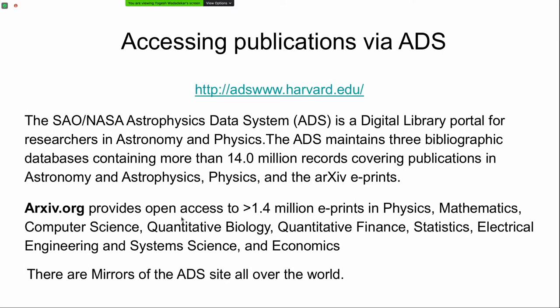The simplest tool needed is access to research publications to find what work has already been done in your area. There is something known as the NASA ADS, which is a digital library maintaining bibliographic databases from more than 14 million records with links to papers in astronomy, astrophysics, physics, and the arXiv eprints. There is also a similar website called arXiv.org providing open access to recent papers in many different fields. Mirrors of the ADS site exist all over the world. This allows you to search by topic, research area, title, objects, authors, and so on.